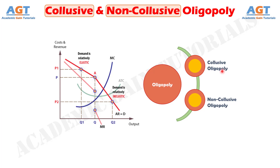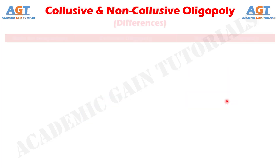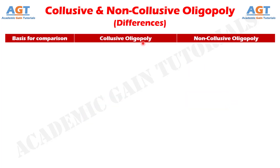On the other hand, in a non-collusive oligopoly, the firms tend to compete with each other by setting their own price and output policy, which is independent of the other firms. So, let's look into the basic differences between collusive oligopoly and non-collusive oligopoly in a tabular form.